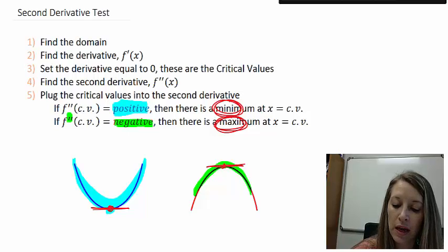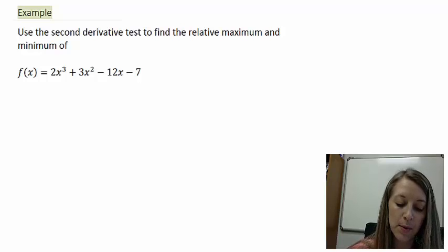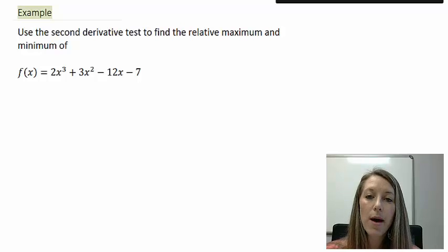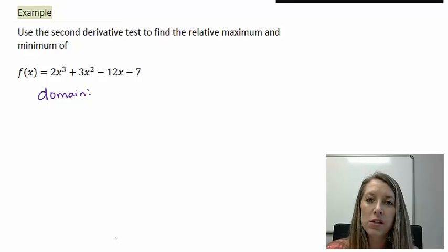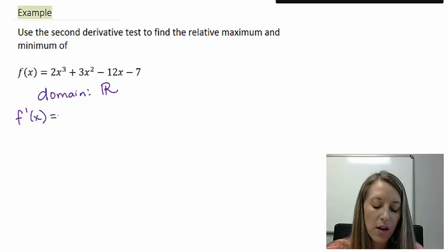Let's do an example. We want to use the second derivative test to find the relative maximum and relative minimum of f of x equals 2x cubed plus 3x squared minus 12x minus 7. The first thing we need to do is talk about the domain of this function. We do not have any square roots, fractions, or logarithms involved, so the domain is all real numbers.